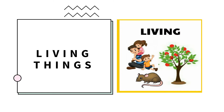Living things — these are the examples of living things: the people, the plants, and the animals. People, plants, animals — these are the examples of living things.